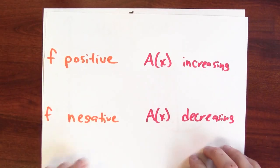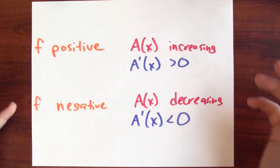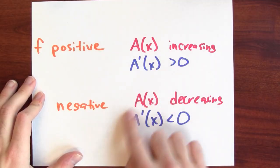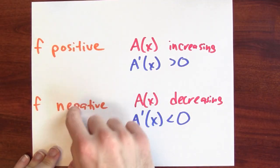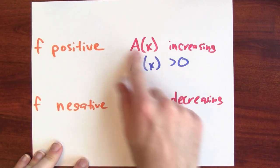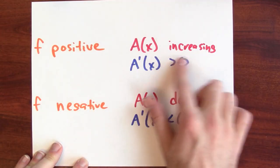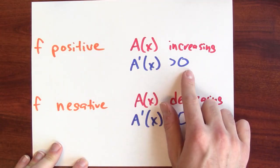And I'll summarize that like this. If the function's negative, the accumulation function is decreasing. What does this sound like? Well, what that sounds like is that the derivative of the accumulation function is related to the thing I'm integrating, the so-called integrand. If I'm integrating a positive function, the accumulation function is increasing. And another way to say that the accumulation function is increasing would be to say that the derivative is positive.